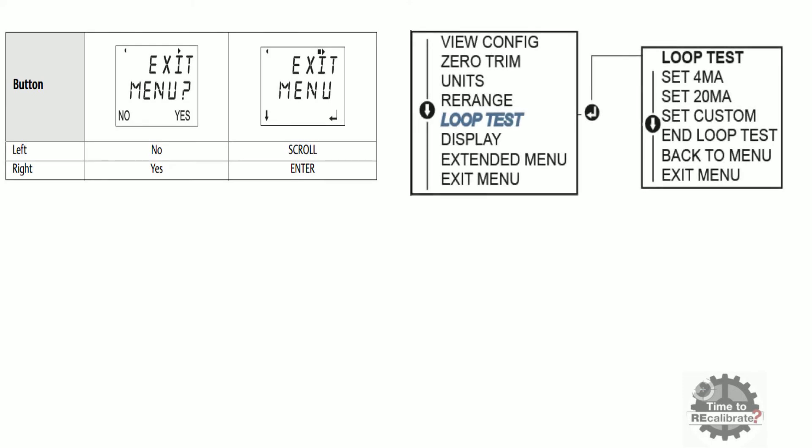Once you isolate transmitter from process, press LH button to access menu function. Then press LH button until you reach to loop test option. Once you reach to loop test, press RH button to enter in this menu.